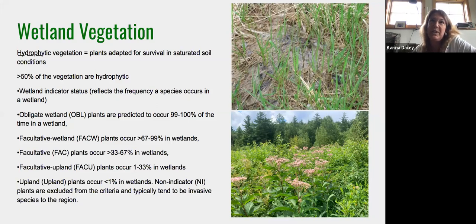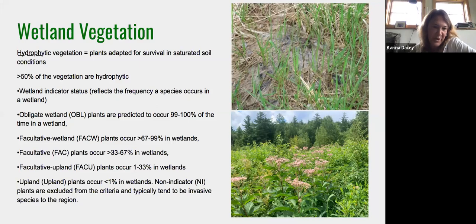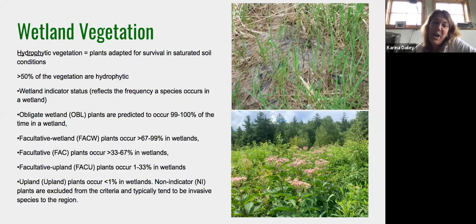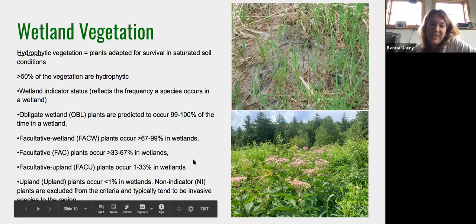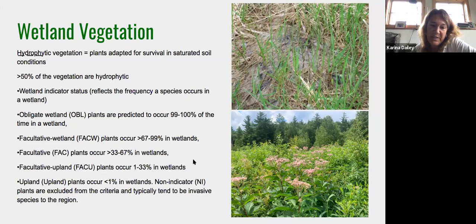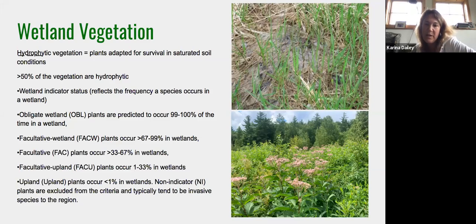White pine is a facultative upland plant but can be found in wetlands or uplands. Facultative upland plants occur in wetlands only 1–33% of the time. The remaining upland or non-indicator plants are excluded — you might see them in a wetland but they aren't linked to wetland vegetation and are not true hydrophytic plants.